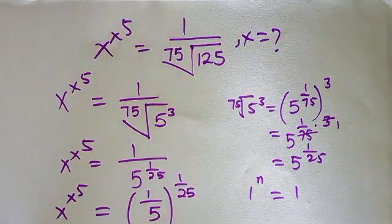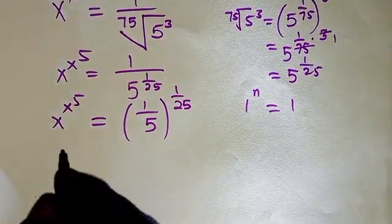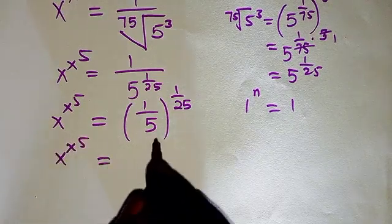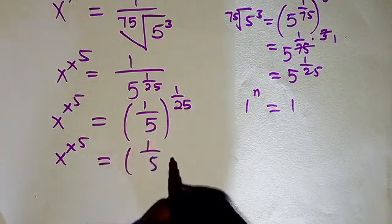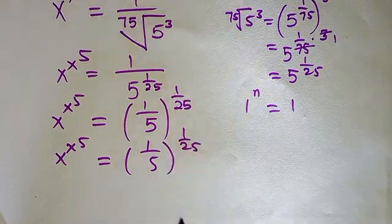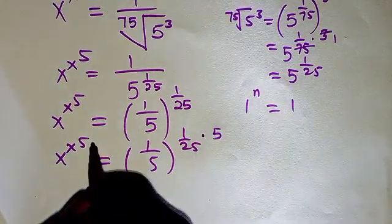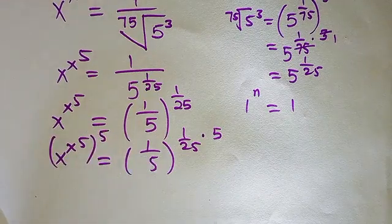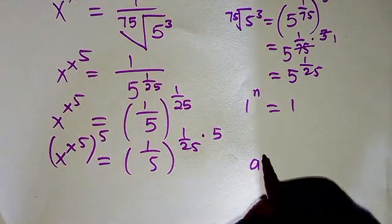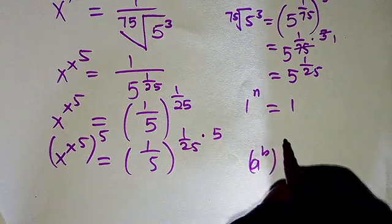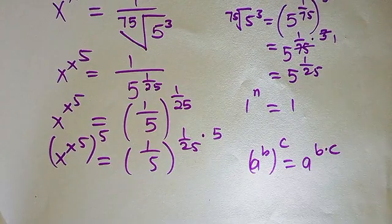So now we have x to the power x to the power 5 equals 1 over 5, raised to the power 1 over 25. If I multiply the outer exponent by 5, I must also multiply the right-hand side exponent by 5. From the law of indices, a to the power b, then to the power c equals a to the power b multiplied by c.